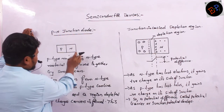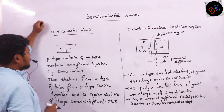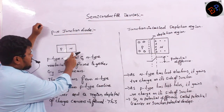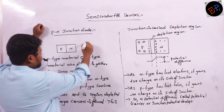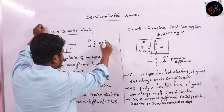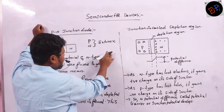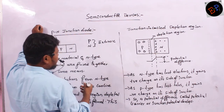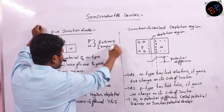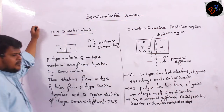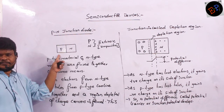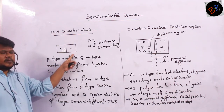First we will study about PN junction diode. Here what we do, we take a P-type semiconductor and N-type semiconductor. These two are extrinsic semiconductors — P-type and N-type. Extrinsic semiconductors means impurities are added. So in P-type, what kind of impurities are added? Trivalent. N-type? Pentavalent.